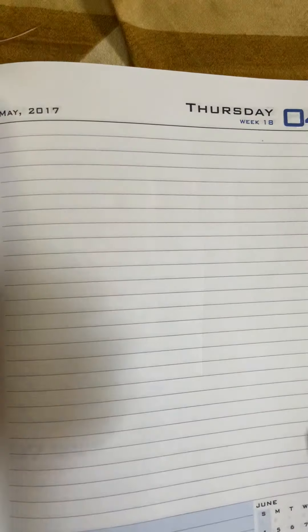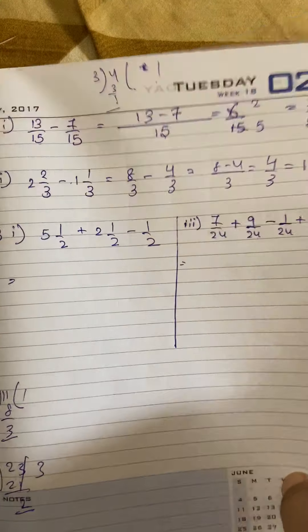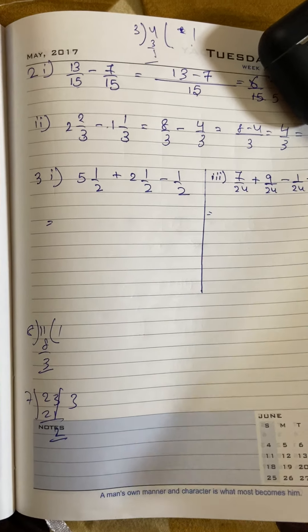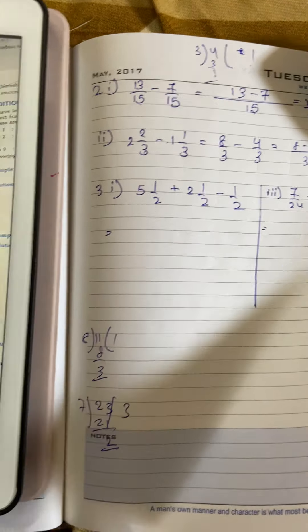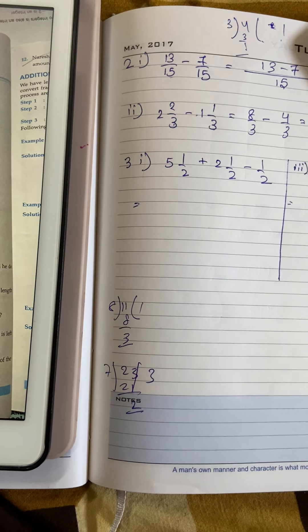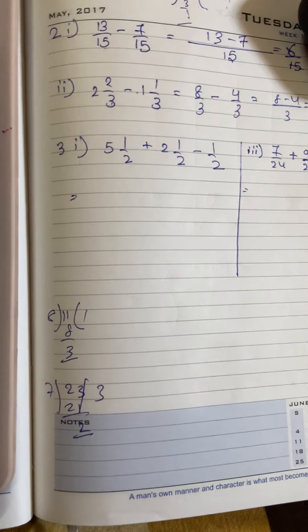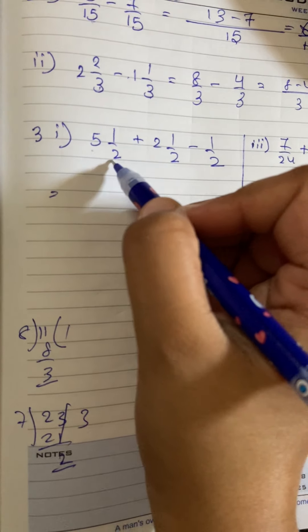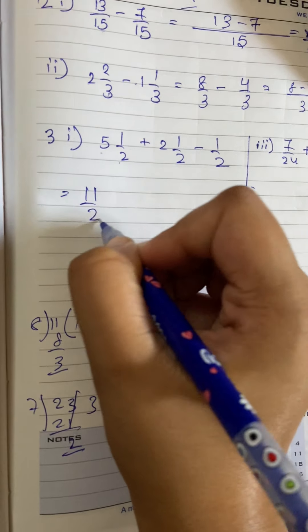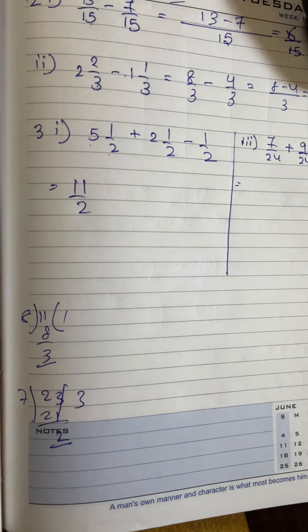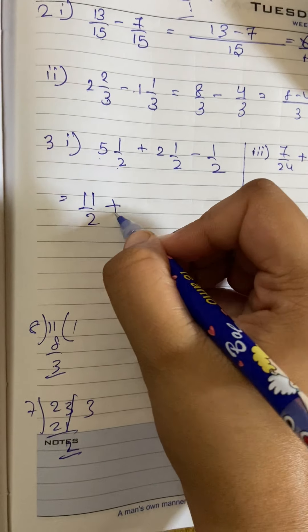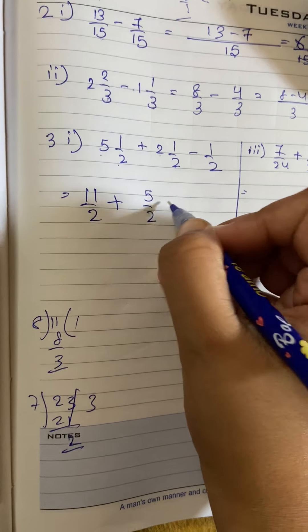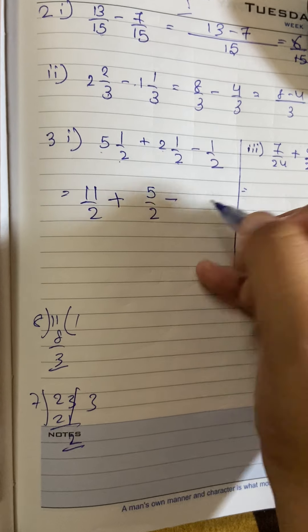Similarly, the third question is a simplification where addition and subtraction are mixed together. First, we can see there is a mixed fraction, so convert it to improper: 5 into 2 is 10, plus 1 is 11 by 2. Then plus: 2 into 2 is 4, plus 1 is 5 by 2, and then minus 1 by 2 (which is half).